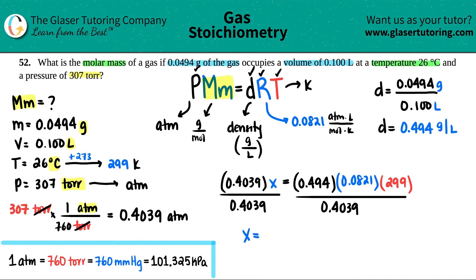And now I'm going to have my answer. X equals the molar mass. So let's see. 0.494 times 0.0821 times 299 divided by 0.4039. And it looks like three sig figs. So we'll do 30.0. So 30.0. And remember the units for molar mass is gram per mole. And that's the molar mass of this gas. And there you go.